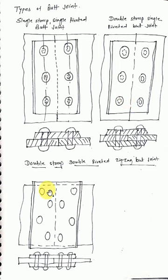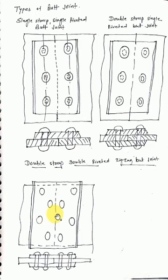We can also have a double riveted, double strap, zigzag type butt joint. This covers the full classification of riveted joints.